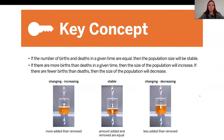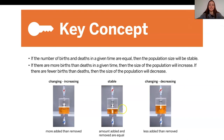That was a great visual to help understand why populations can stay the same even when births and deaths are occurring. If the number of births and deaths in a given time are equal, the population will be stable — just like when liquid was being added and removed at the same rate. Stability doesn't mean nothing is happening; it means births and deaths are equal. If there are more births than deaths, the population will increase. If there are fewer births than deaths, the population will decrease.